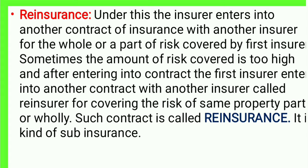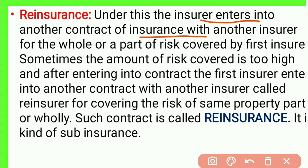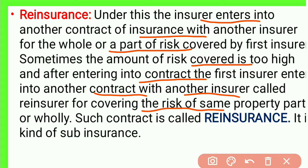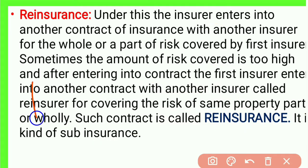Next is re-insurance. Under this policy, the insurer enters into another contract of insurance with another insurer for the whole or a part of the risk covered by the first insurer. Sometimes the amount of risk covered is too high, so the first insurer enters into another contract with another insurer called the re-insurer for covering the risk of the same property, partly or wholly. Such a contract is called re-insurance. It is a kind of sub-insurance.